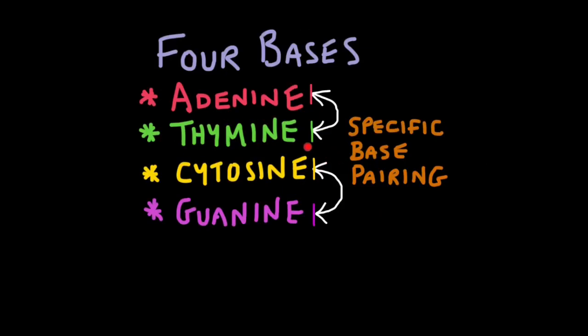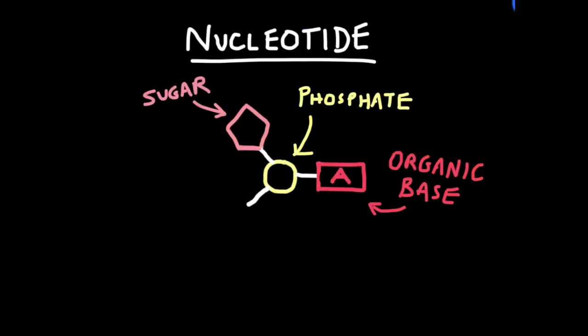Adenine, thymine, cytosine, and guanine. You only need to know them by their first letter, A, T, C, and G. These bases make up the genetic code.